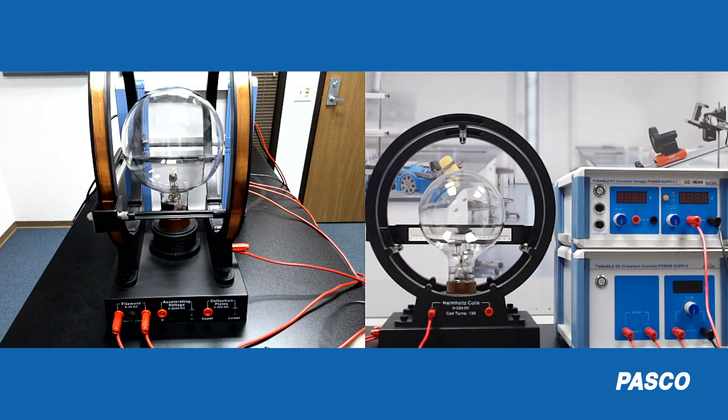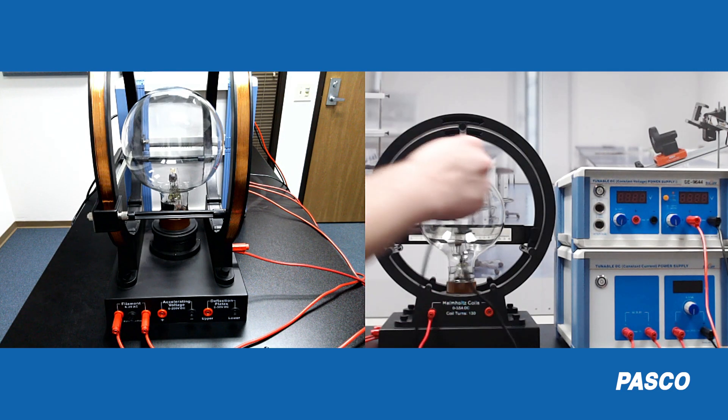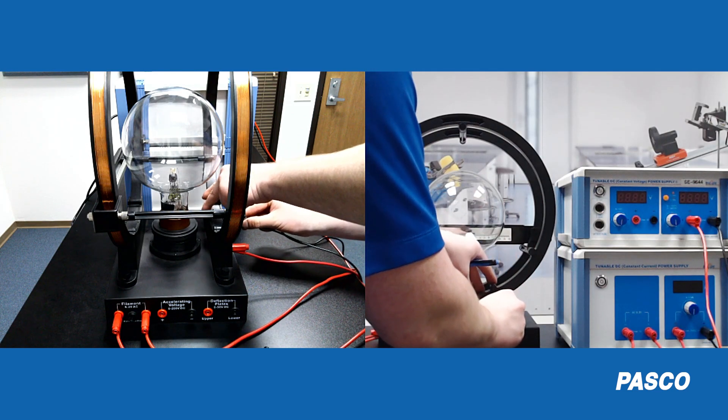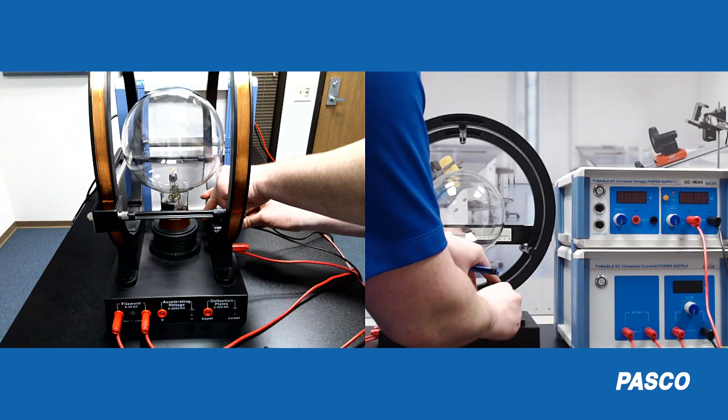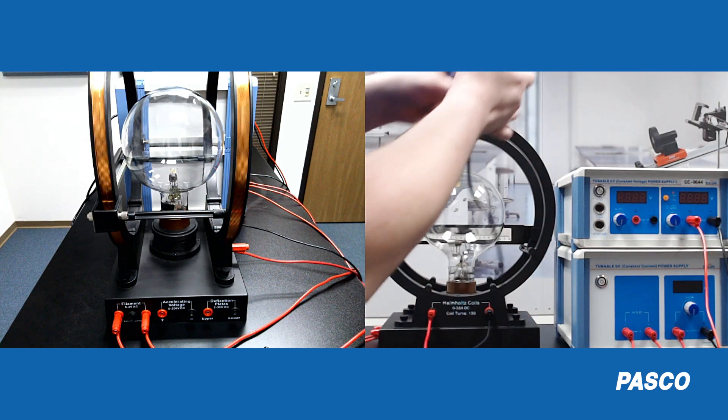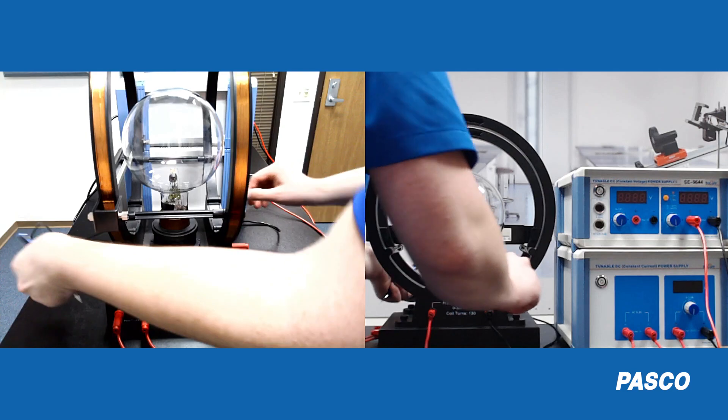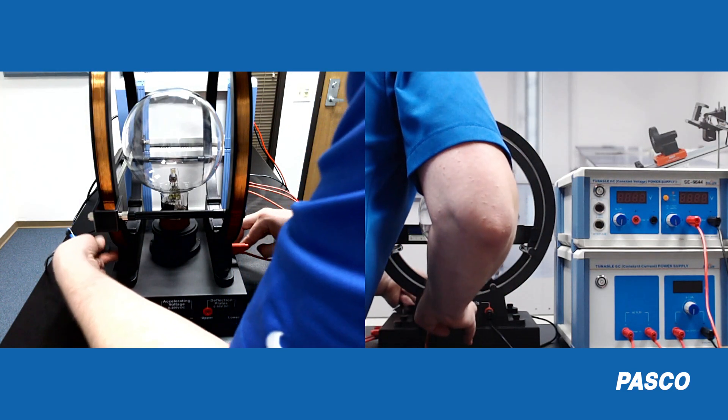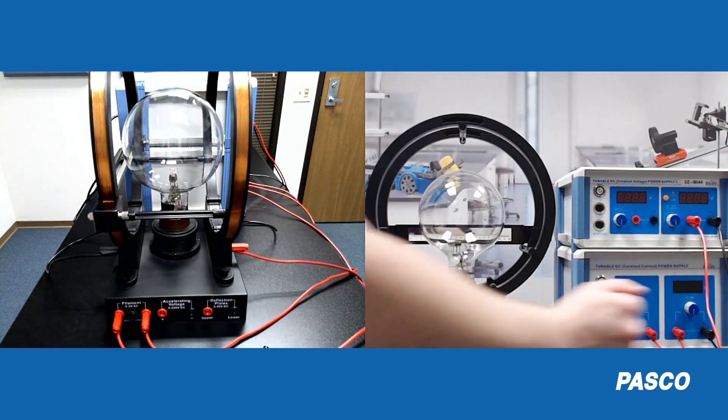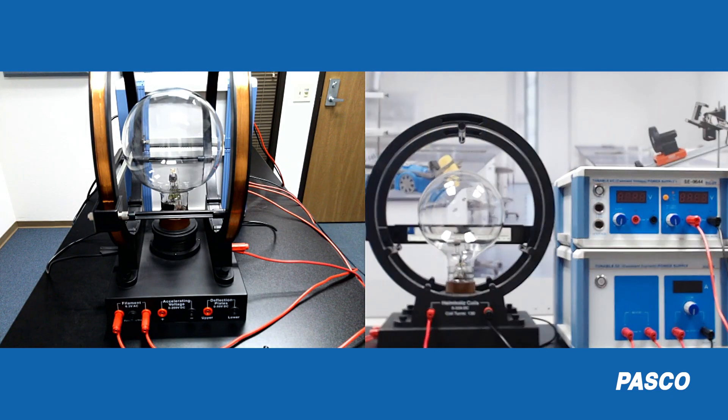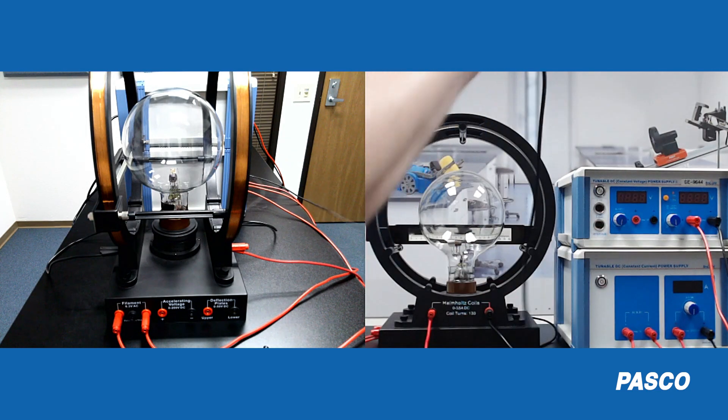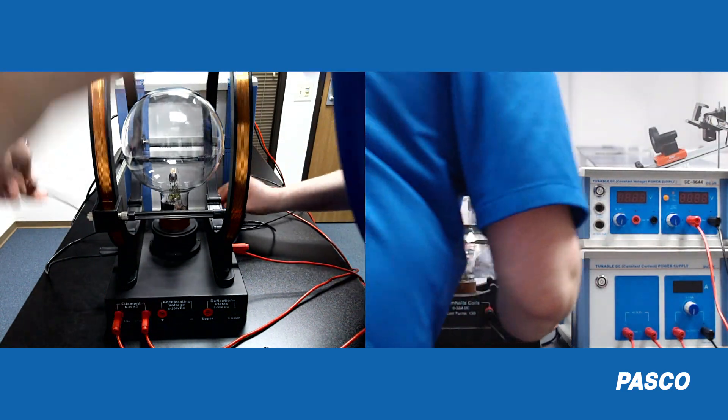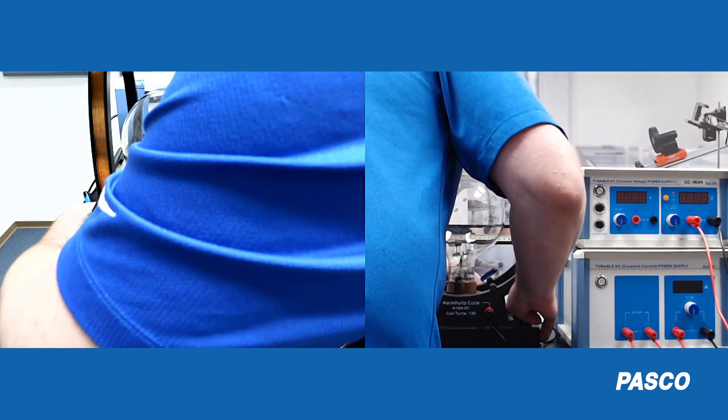Then we're going to run a black jumper wire. It's also important to use these shrouded cables because we're dealing with high voltages here. We're going to connect the red here to the other red on the opposite end of the Helmholtz coil. And then we're going to take the black cable from our constant current and connect it to the last open port on the back side here, which will be the black input.